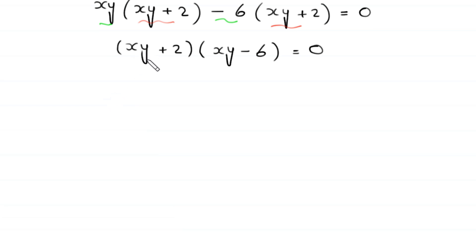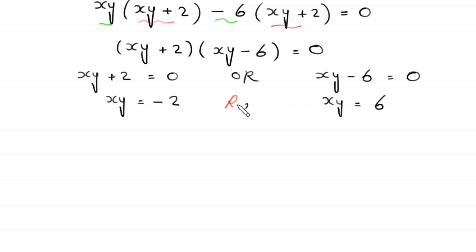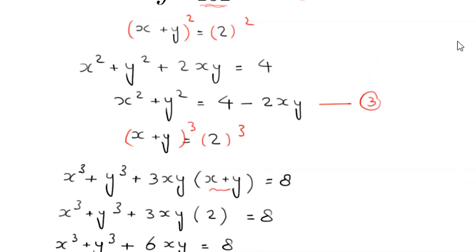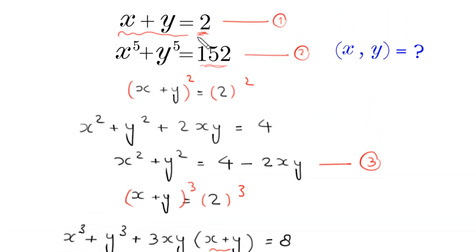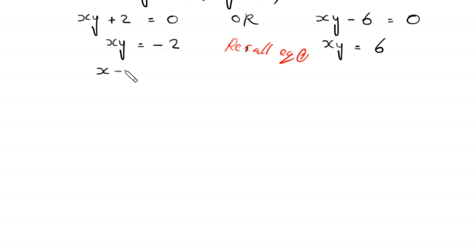From the factored equation, either xy plus 2 equals 0, giving xy equals negative 2, or xy minus 6 equals 0, giving xy equals 6. We now use equation 1, x plus y equals 2, to solve both cases.